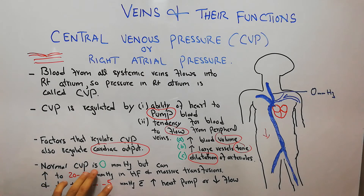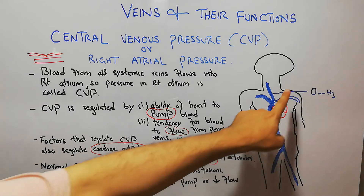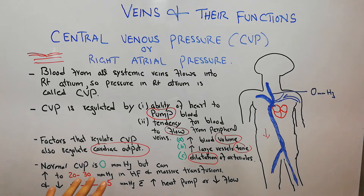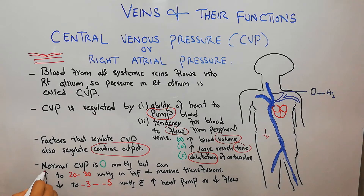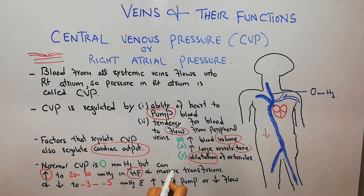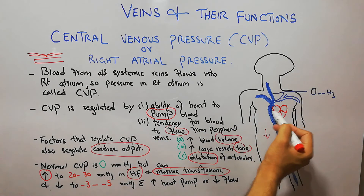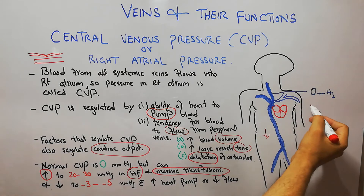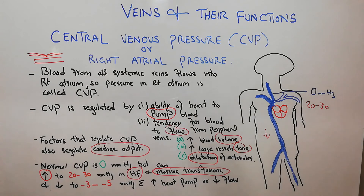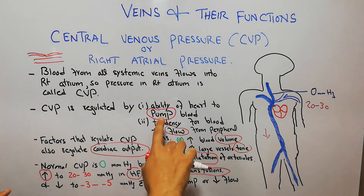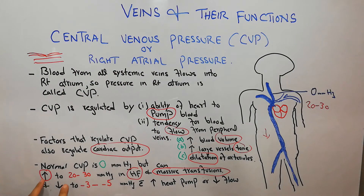The normal value of the central venous pressure is 0 mmHg. However, it can increase to around 20 or 30 mmHg in heart failure and massive blood transfusion. The CVP is determined by pumping and flowing — heart failure is one factor that increases CVP, and massive transfusion is the second, because transfusing a lot of blood increases the blood volume, which increases flow towards the right atrium.